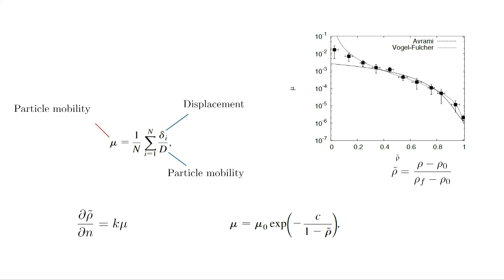There are simple algorithms people use. You define a particle mobility - how much each particle is moved - where small d is the particle diameter and D is the diameter of the system. You associate the densification factor d-rho/dn to be proportional to mu, the particle mobility. If mu is related to density by an Arrhenius-kind relationship, you get a particular functional form.